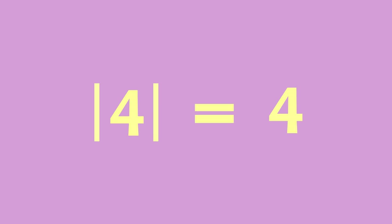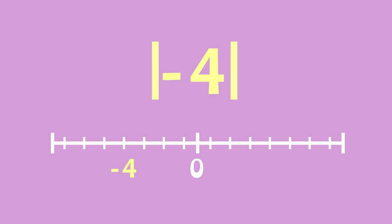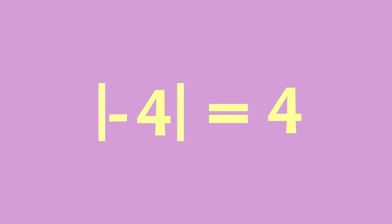The notation for absolute value is two straight lines, like this. The absolute value of four is four, because four is four places from zero on the number line. Negative four is also four places from zero on the number line, so its absolute value is also four.